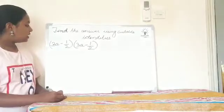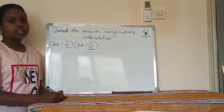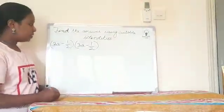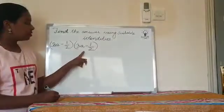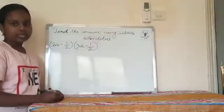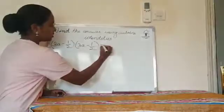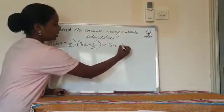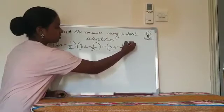The question is (3a - 1/2) into (3a - 1/2). We know that 3a minus 1/2 and 3a minus 1/2 are the same, so that is (3a - 1/2) the whole square.